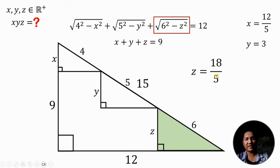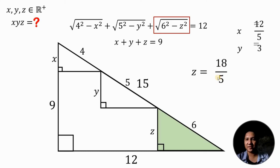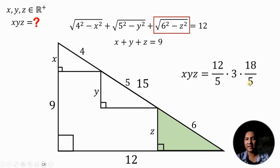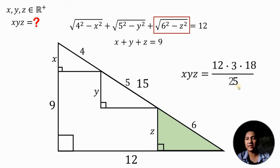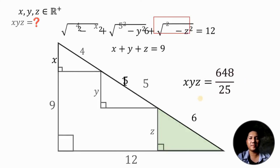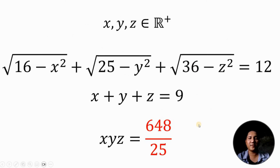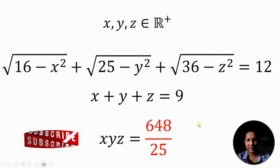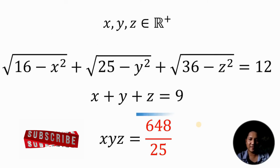Our goal is to find the product of x, y, and z. So we compute 12 over 5 times 3 times 18 over 5. Multiplying all the numbers together gives 12 times 3 times 18, all over 25. Now 12 times 3 times 18 equals 648. Therefore, our answer to this Olympiad problem is 648 over 25. And we are done.